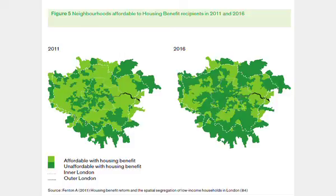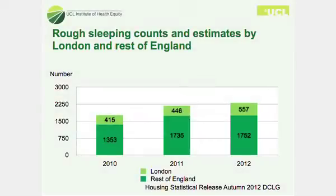This is a depiction of that in relation to housing — what's affordable and unaffordable in London with housing benefit. The dark green areas are unaffordable. In 2011 there are some large areas of London which are unaffordable, but that increases dramatically. We're now halfway through this period and we're seeing a dramatic increase in homelessness and people being moved out of London as a result of all of this.